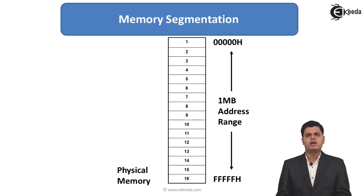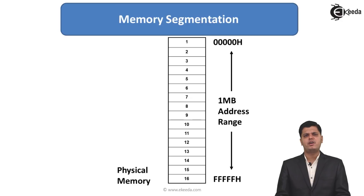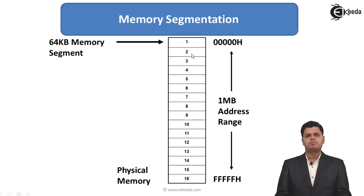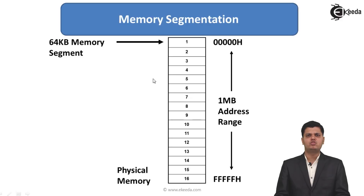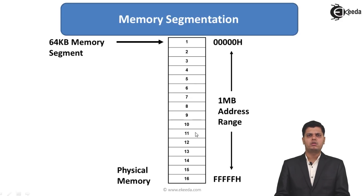In this diagram we have shown the 1 megabyte address range and how its addresses are represented. The first address is 00000H in hexadecimal and the ending address is FFFFFH. From this range, 16 segments are made, represented as 1 to 16. If we consider 64 kilobytes per segment, we can have 16 non-overlapping segments, but with overlapping we can create more segments.